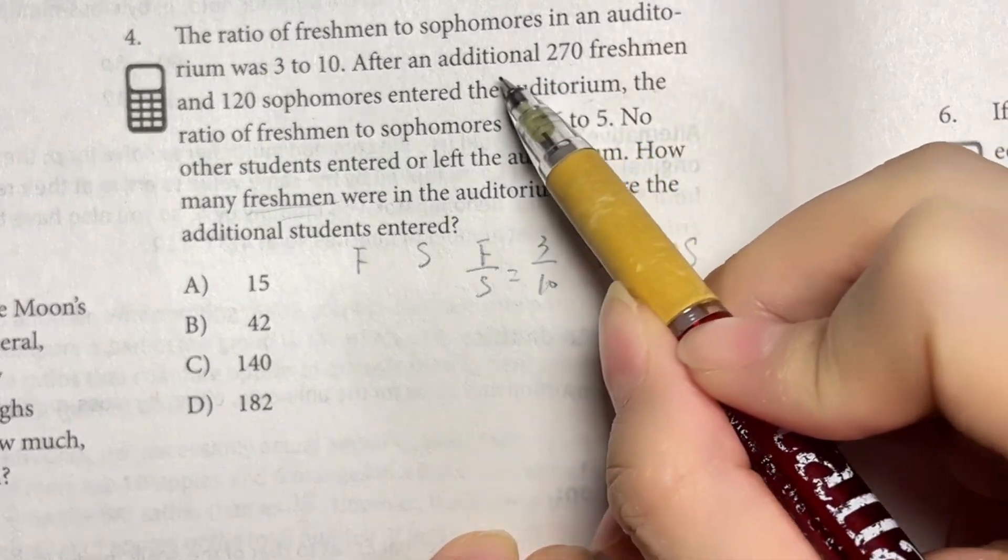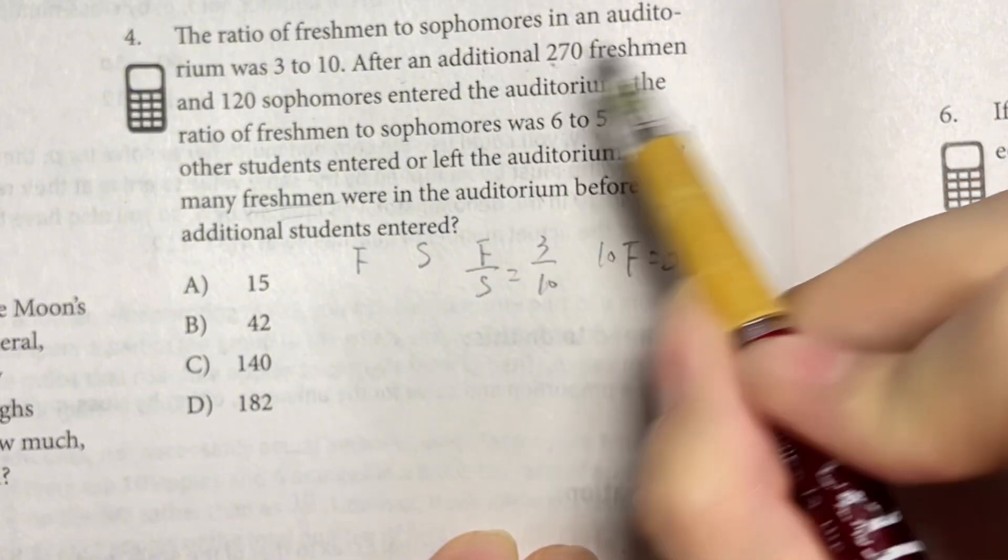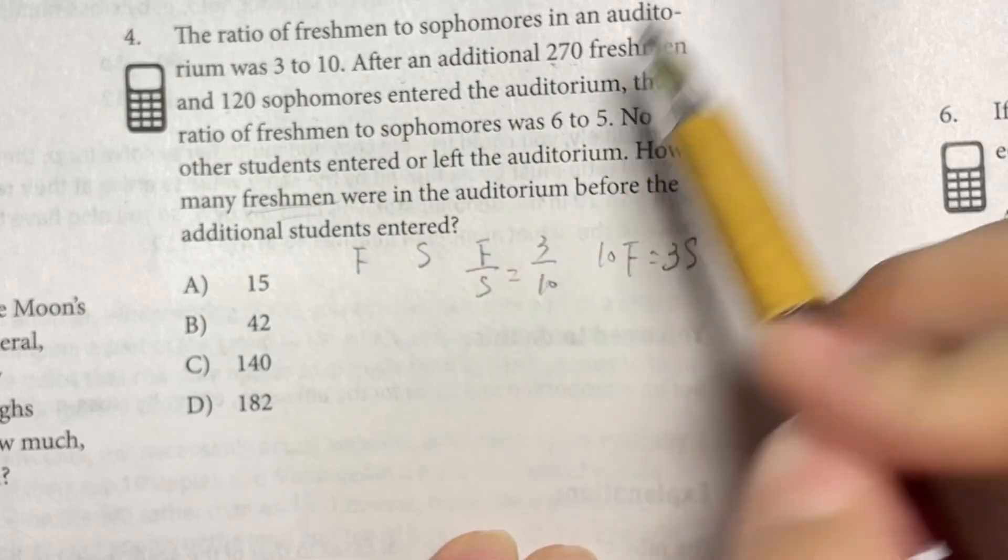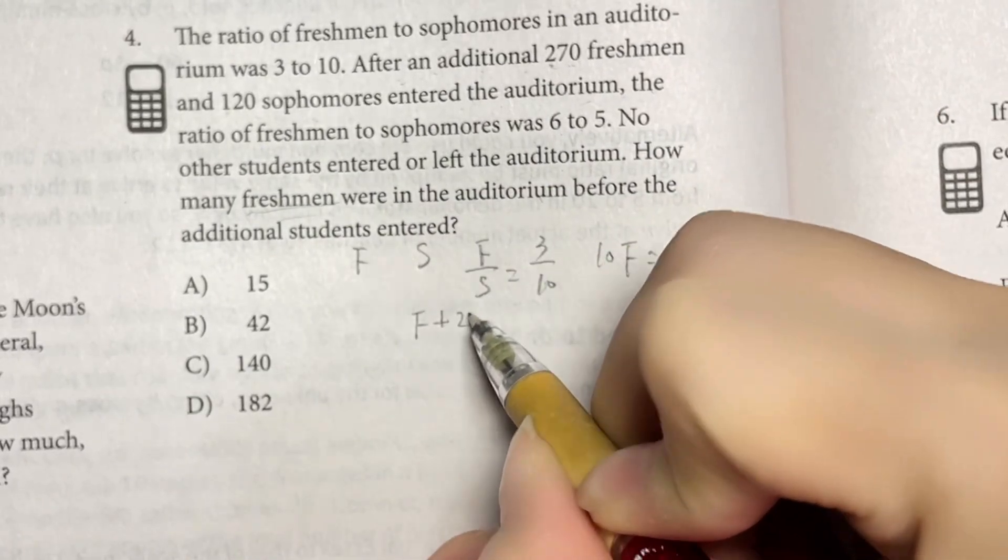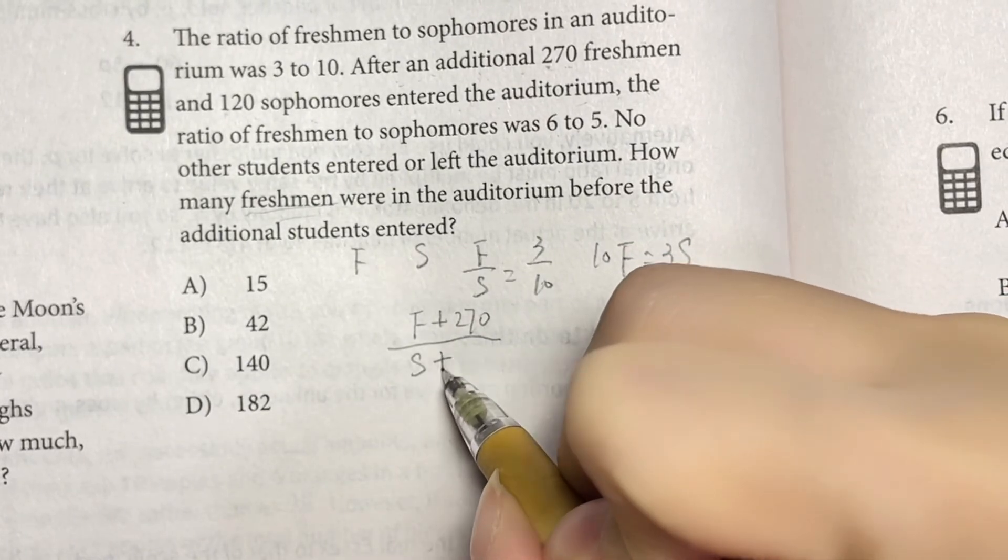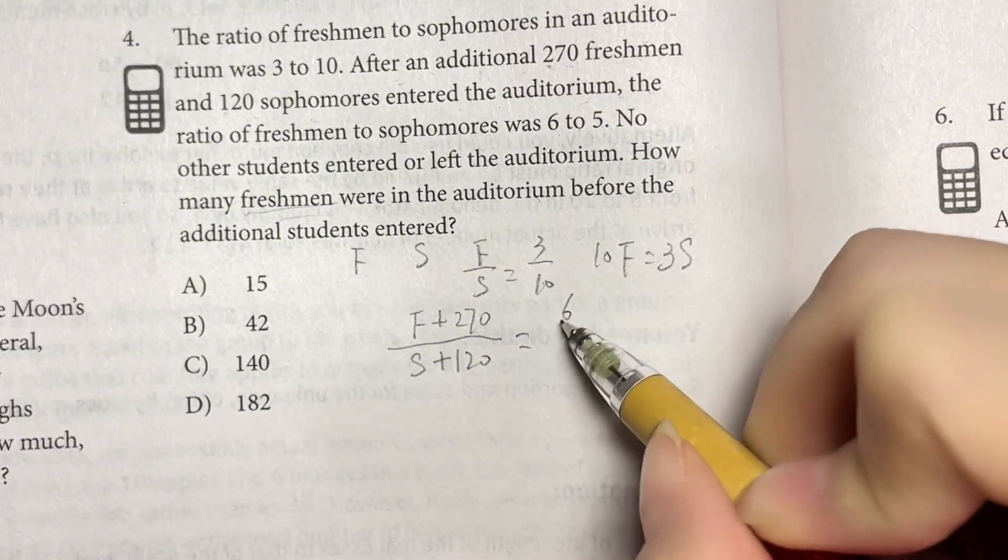After an additional 270 freshmen and 120 sophomores into the auditorium, there will be freshmen plus 270 and sophomores is S plus 120. Now the ratio is 6 to 5.